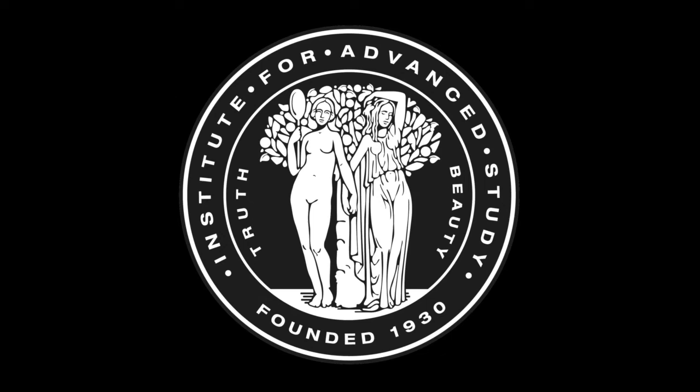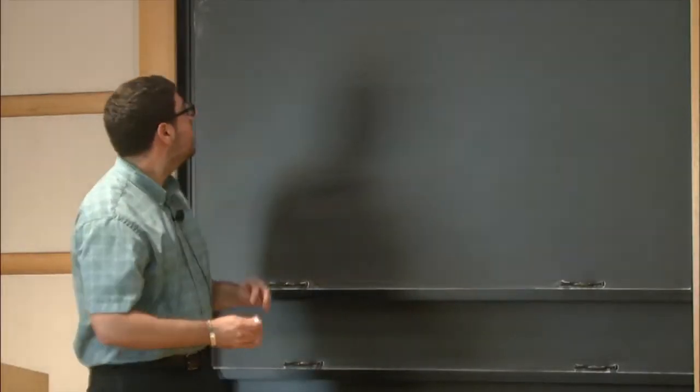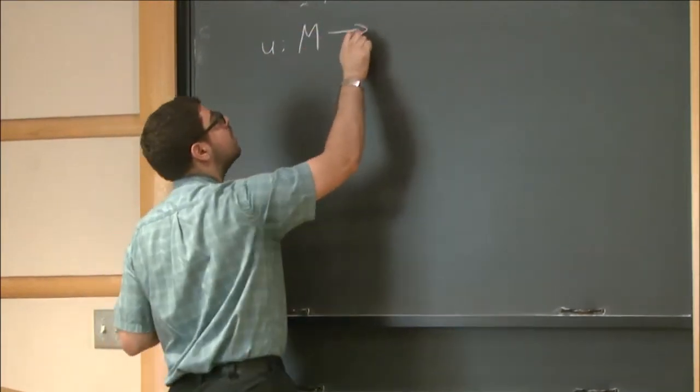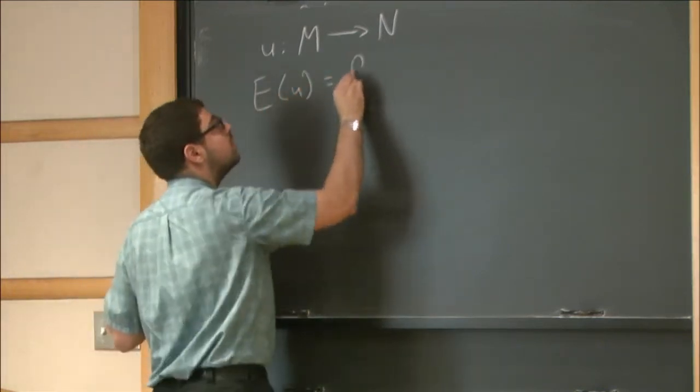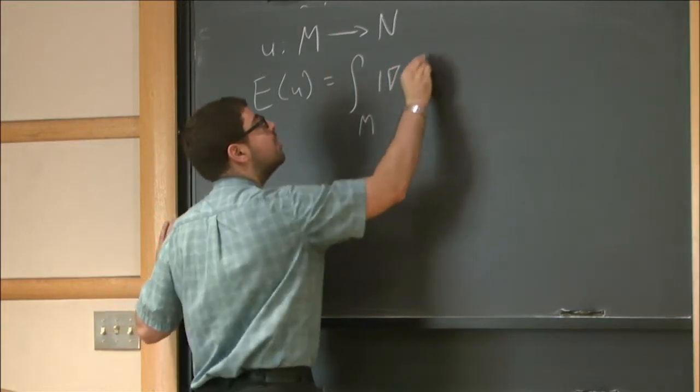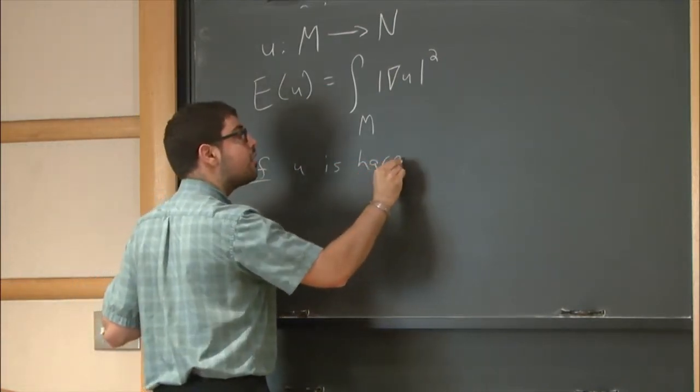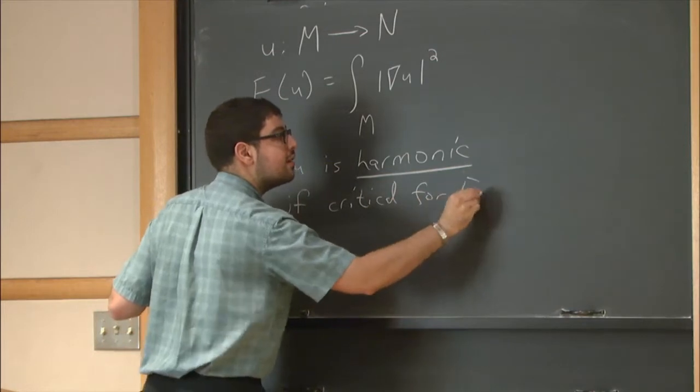Thank you everyone for being here and for the opportunity to be at the Institute and tell you about my work. I'll start with a map between Riemannian manifolds. We define the energy, this is the usual Dirichlet energy as basically the L2 norm of its gradient. And we say that U is harmonic if it's critical for this energy functional.